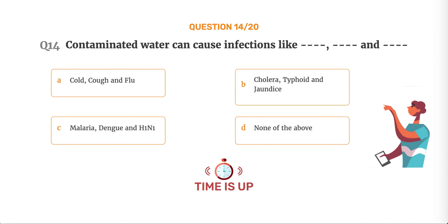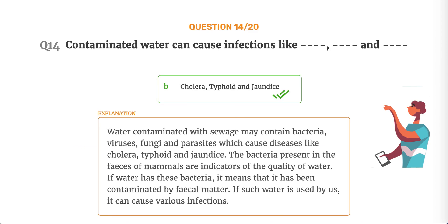The correct answer is Option B, Cholera, typhoid and jaundice. Water contaminated with sewage may contain bacteria, viruses, fungi and parasites which cause diseases like cholera, typhoid and jaundice. The bacteria present in the feces of mammals are indicators of water quality. If water has these bacteria, it means it has been contaminated by fecal matter, and if such water is used by us, it can cause various infections.